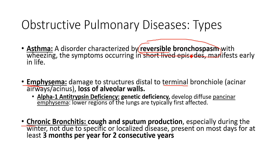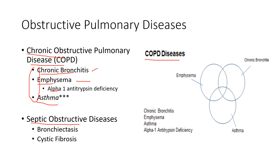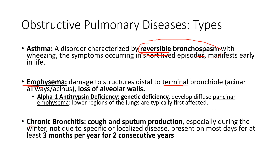Going over our primary groupings: we have obstructive pulmonary diseases, thinking about problems getting air out, most notified by a FEV1/FVC ratio less than 0.7, where FEV1 takes the big hit. Our subgroupings are emphysema, chronic bronchitis, and asthma — though when people refer to COPD, it's typically not referring to asthma. We also have septic obstructive diseases like bronchiectasis and cystic fibrosis. In the next lecture, we're going to go over these specific conditions and how their pathophysiology develops.